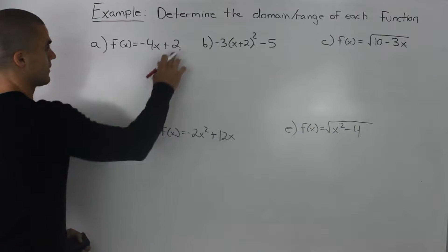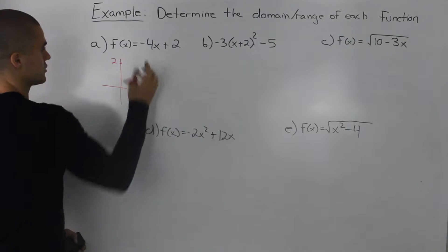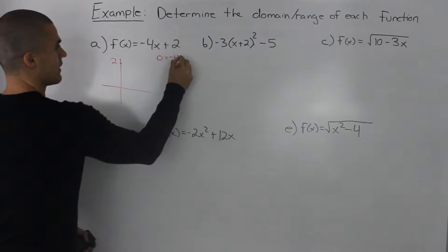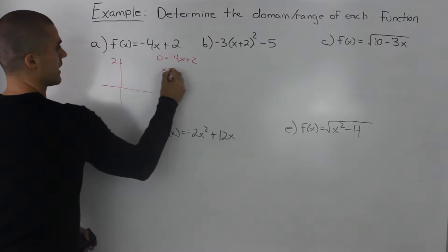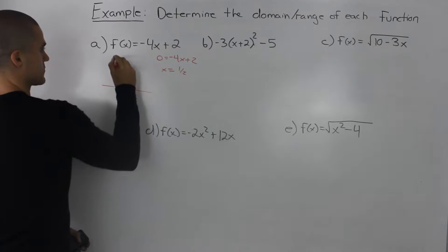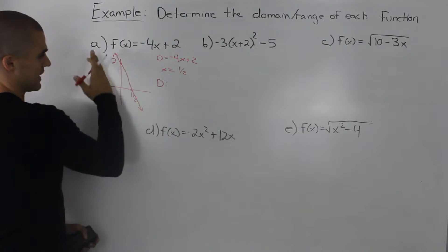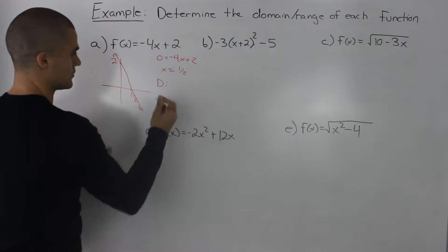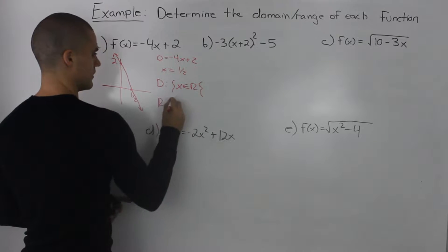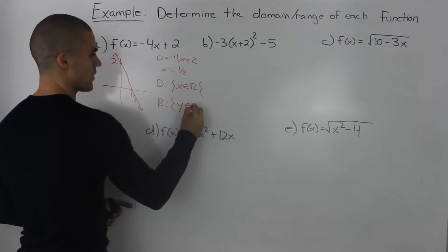Starting off with this first function, notice how it's a line with a y-intercept of 2 and a slope of negative 4. To solve for the x-intercept, we plug in 0 for y, and isolating for x, we get a value of 1/2. So the x-intercept is 1/2. The x value can take any value, so the domain is x is an element of real numbers. And the y values can also be any value, so the range is y is an element of real numbers.